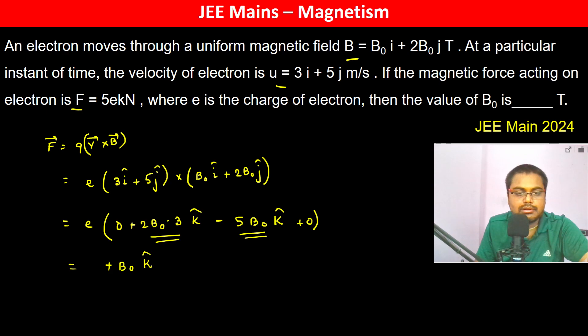So therefore, the answer is what is the value of B₀? Now this is B₀k̂ times e, this is equal to 5ek̂. e and e cancel, so B₀ becomes 5 Tesla.